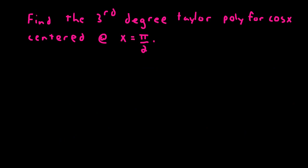So let's go ahead and look at an example here. Let's go ahead and find the third degree Taylor polynomial for the cosine of x. And we're going to center this polynomial at x equals pi over 2. So what do we need to know? We need to know the first three derivatives of cosine. So the function is cosine, first derivative is negative sine, second derivative is negative cosine, and finally the third derivative is sine.